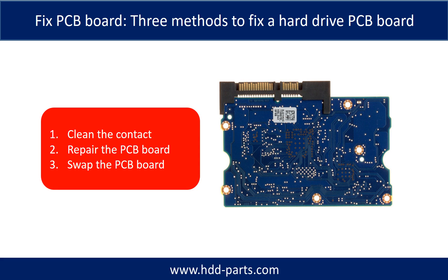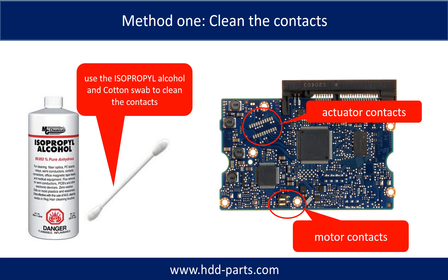There are three methods to fix a hard drive PCB board. One: clean the contacts. Two: repair the PCB board. Three: swap the PCB board. Method one — clean the contacts. Cleaning the contacts on the PCB board and also on the hard drive can fix the problem caused by poor connection between the PCB board and the hard drive.